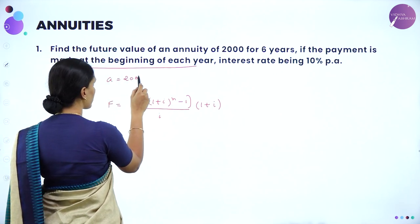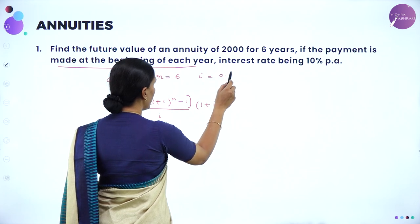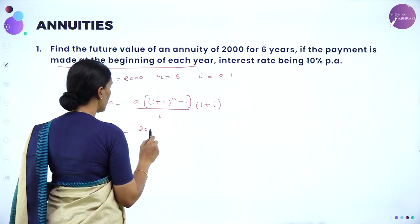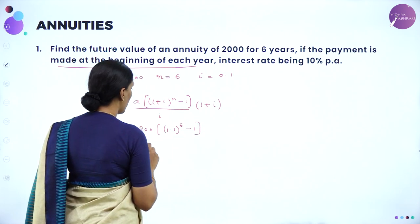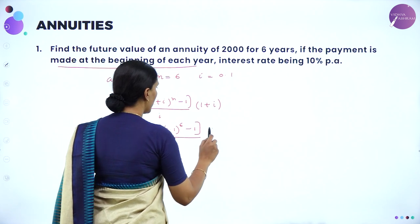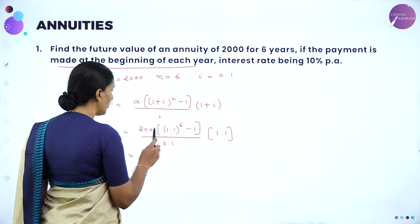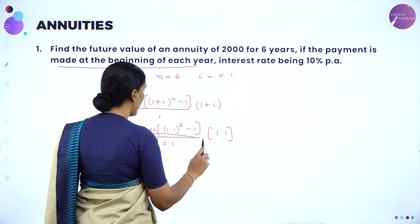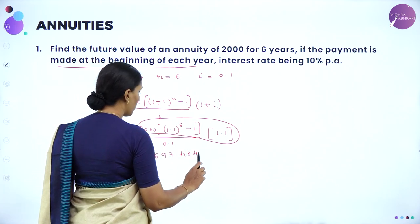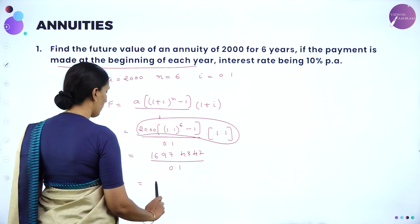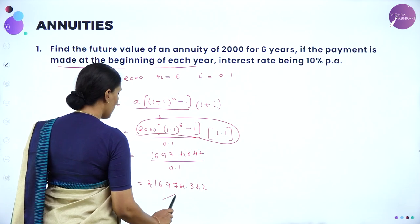Given: A is 2000, N is 6 years (number of installments is 6), and the rate of interest is 0.1 in decimal. So 1 plus 0.1 is 1.1 to the power 6 minus 1, divided by 0.1 into 1.1. Evaluating, the numerator value is 1697.4342 divided by 0.1, which equals 16,974.342 rupees. So this is the future value.